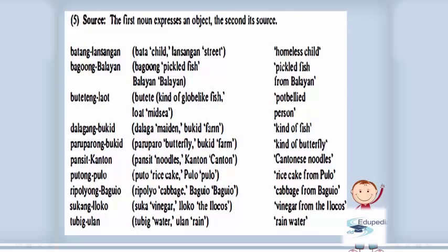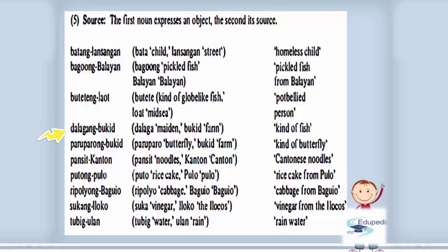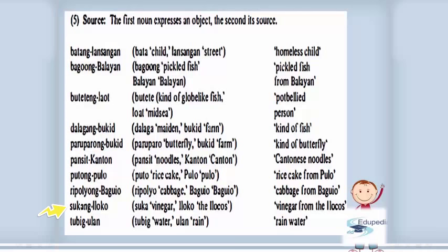Fifth, source: the first noun expresses an object, the second expresses its source. Examples: 'batang nagsangat' (homeless child); 'bagoong balayan' (pickled fish from Balayan); 'buteteng laot' (pot-bellied person); 'galagang bukid' (a kind of fish); 'paruparong bukid' (a kind of butterfly); 'pansit kanton' (Canton noodles); 'putong pulo' (rice cake from Pulo); 'repolyang Baguio' (cabbage from Baguio); 'sukang Iloko' (vinegar from the Ilocos); 'tubig ulan' (rain water).